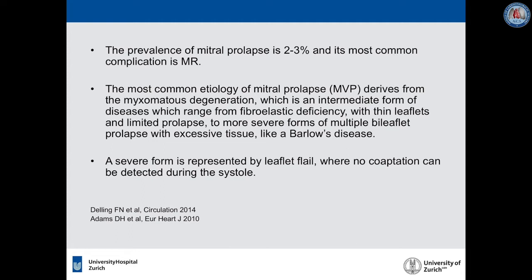The most common etiology of mitral prolapse derives from myxomatous degeneration, which is an intermediate form of disease ranging from fibroelastic deficiency with thin leaflets and limited prolapse to more severe forms of multiple bi-leaflet prolapse with excessive tissue, like Barlow's disease. A severe form is represented by leaflet flail, where no coaptation can be detected during systole.